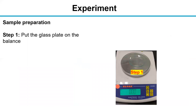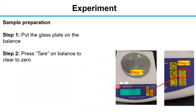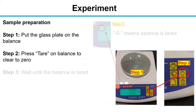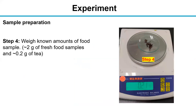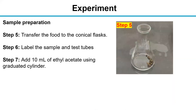Now we will start our experiment. First, we calibrate the balance. Put the glass plate on the balance, then press tare on the balance to clear to zero and wait until the balance is tared. You can see zero on the screen, which means the balance is tared. For sample preparation, after calibrating the balance, we weigh around 2 grams of fresh food sample and 0.2 grams of tea respectively. Then we transfer the food to the conical flask and label the sample and test tubes.